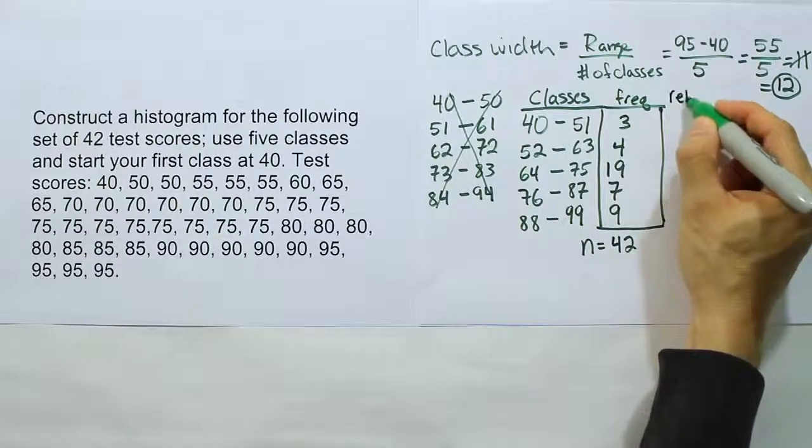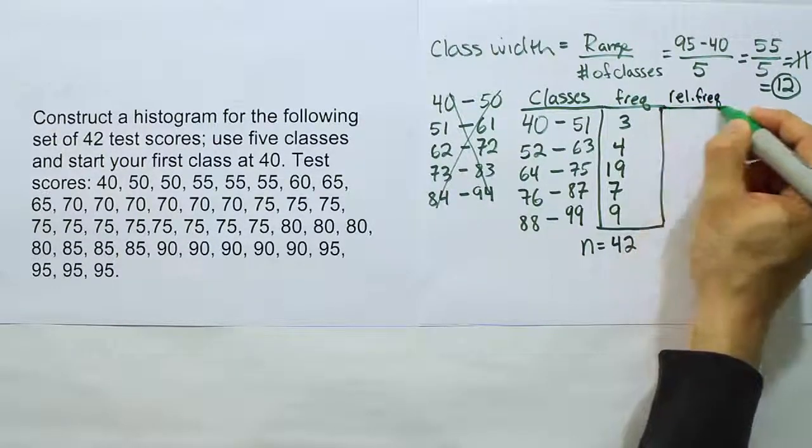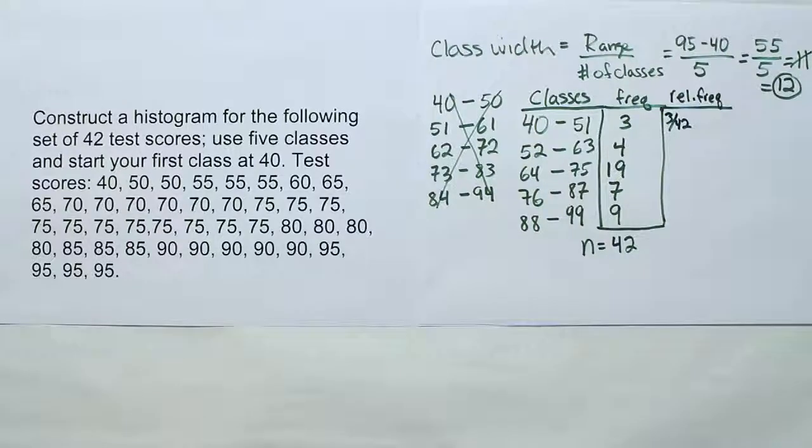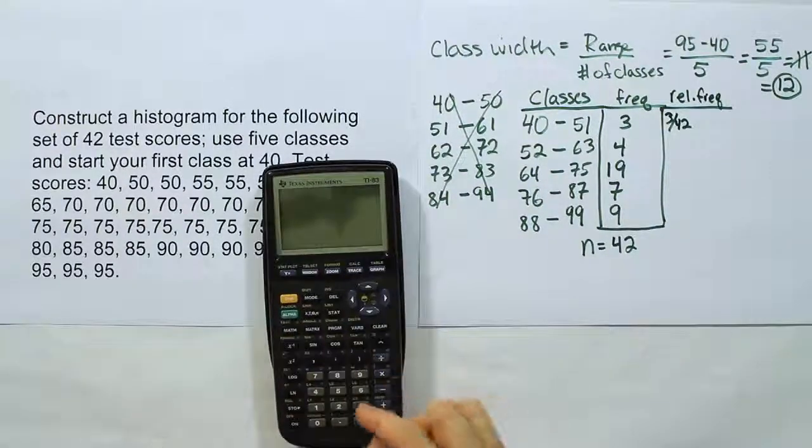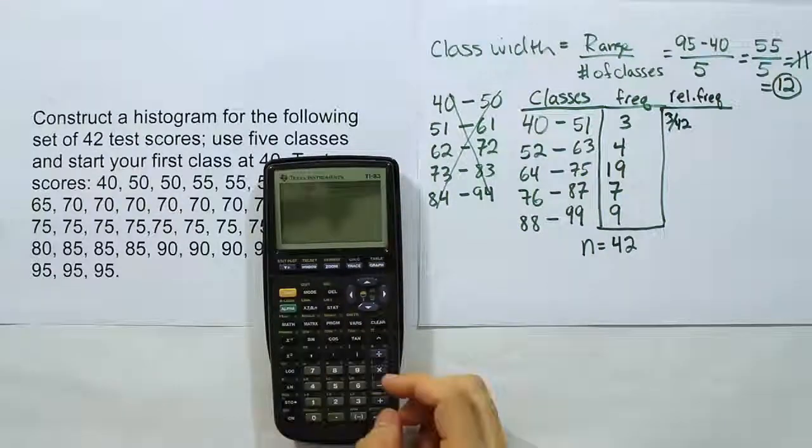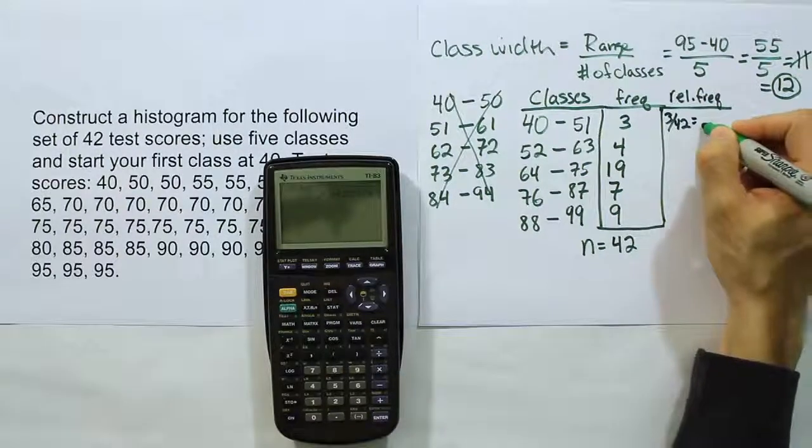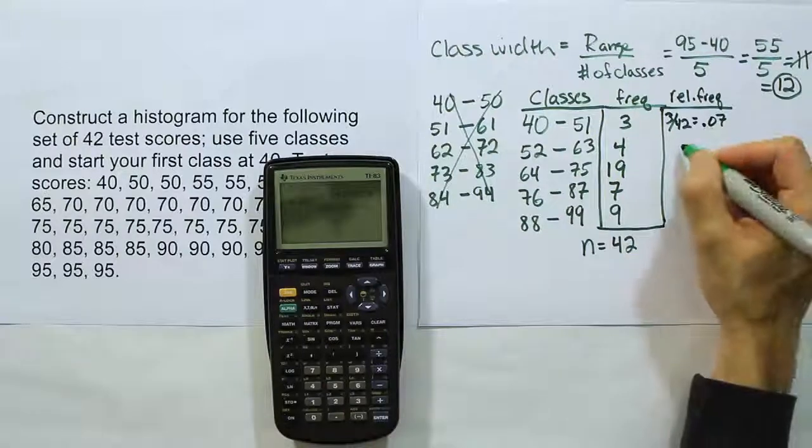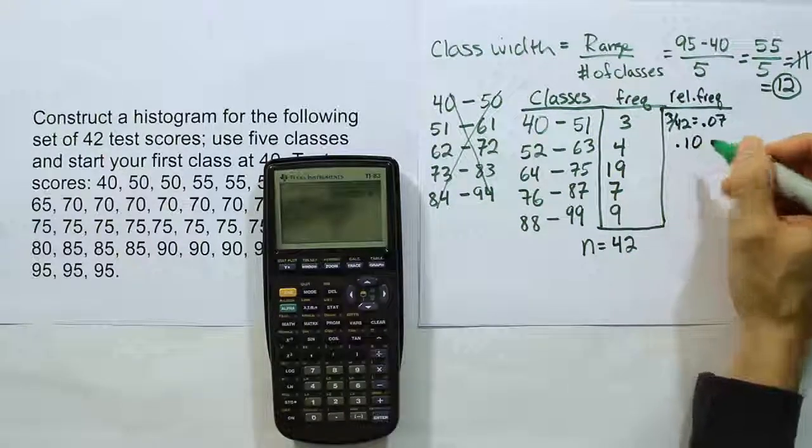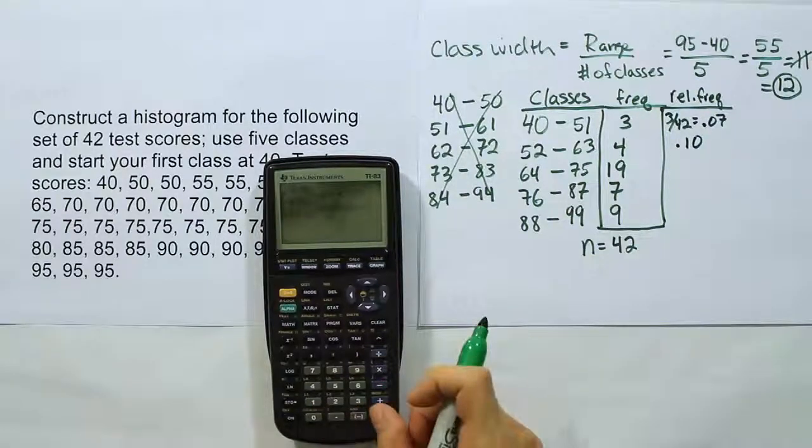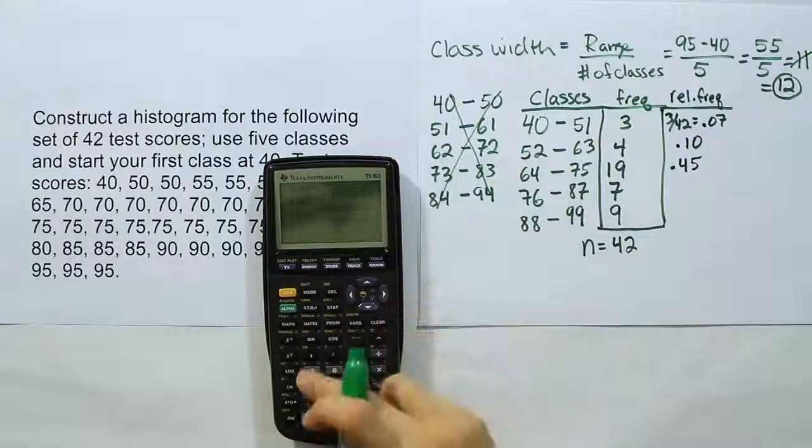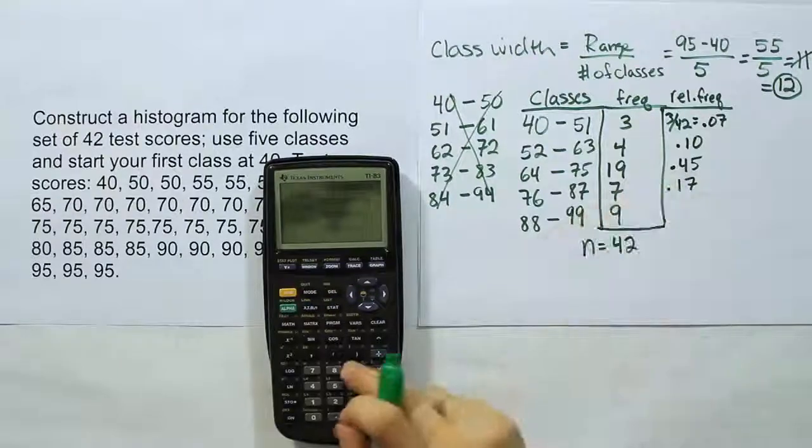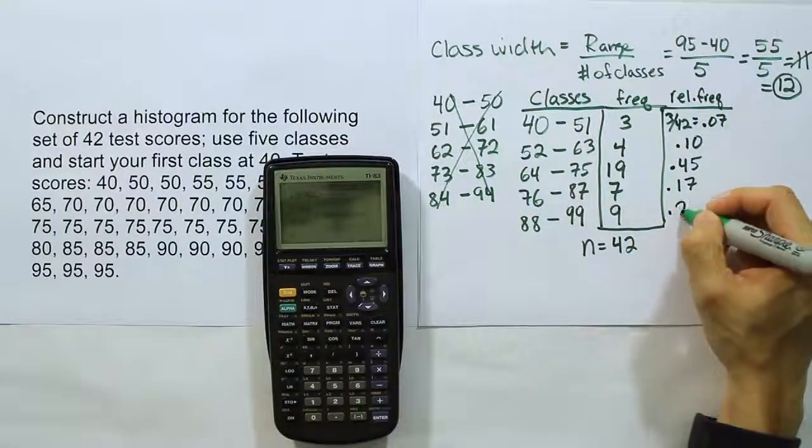Now we can come up with a relative frequency. To get the relative frequency, we simply have to divide each of these frequencies by 42. So we'll do 3 divided by 42 to get the first one. If I do 3 divided by 42, I end up with .07. 4 divided by 42, I get .10. 19 divided by 42 gives me .45. 7 divided by 42, I get .17. And then 9 divided by 42, I get .21.